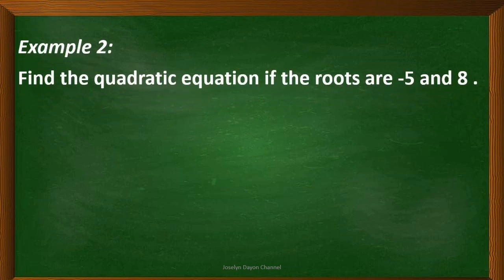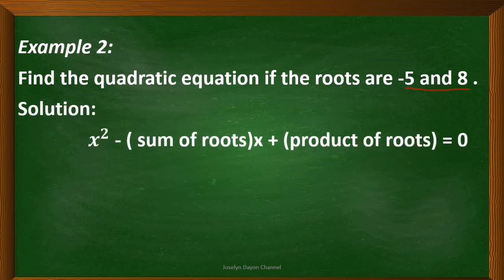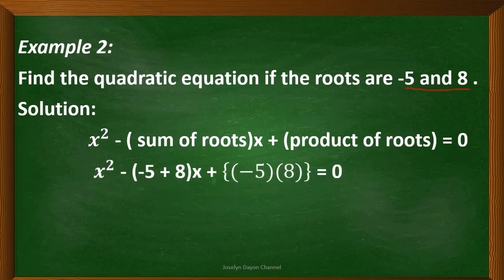Let's have the second example: find the quadratic equation if the roots are negative 5 and 8. Same as example 1, we write the general equation. Copy x squared, copy the minus sign, then add the two roots: quantity of negative 5 plus 8 times x, plus multiply the two roots: negative 5 times 8 equals 0.